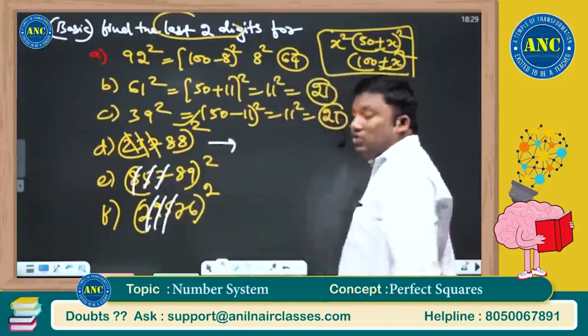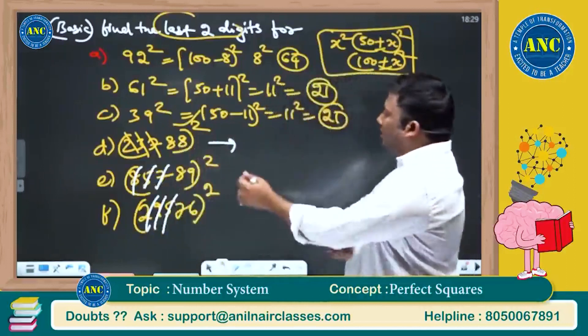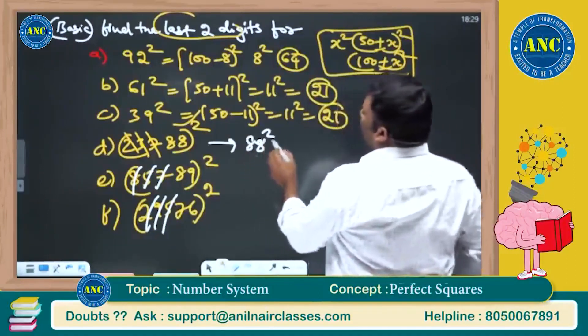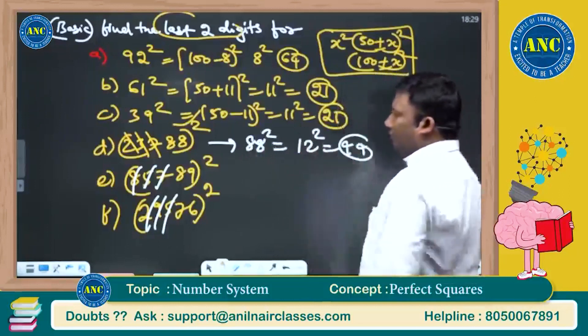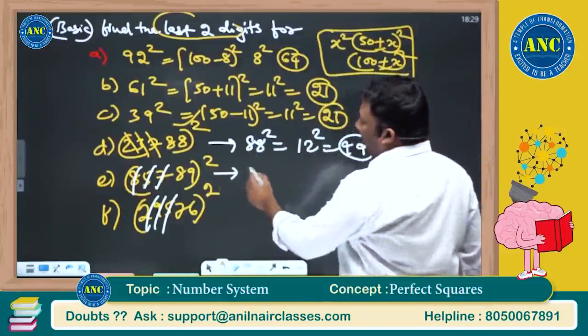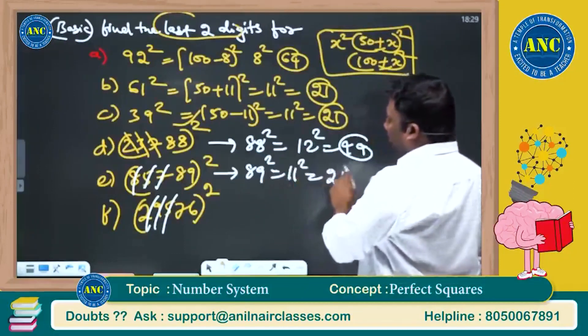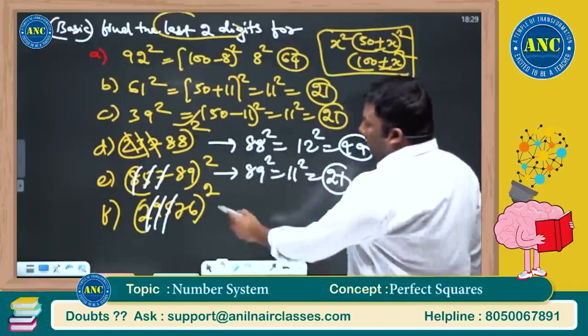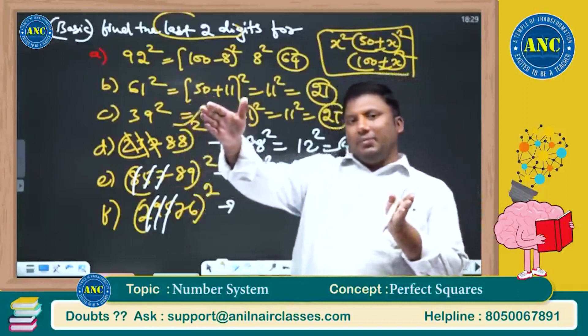88 square. Check how much it is more than 50 or less than 50. Now see here, 88 square: 88 is 12 less than 100, 12 square is 144. These are nothing but 89 square: 89 is 11 square, 121.